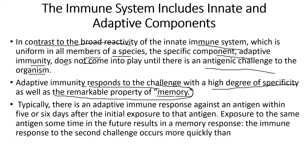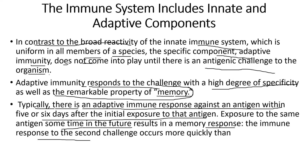Typically, there is an adaptive immune response against an antigen within five or six days after initial exposure. Exposure to the same antigen in the future results in a memory response, and the immune response to the secondary challenge occurs more quickly than the first one. I'll now give a brief overview of memory cells.